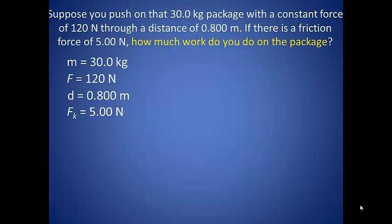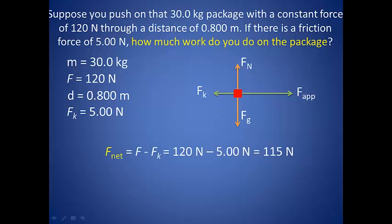Now suppose you push on that 30 kilogram package with a constant force of 120 newtons through a distance of 0.8 meters. If there is a friction force of 5.0 newtons, how much work do you do on the package? Since we are dealing with forces, it can be useful to draw a free body diagram of our package. There is no vertical motion, so our force of gravity is balanced by our normal force. We are pushing the box to the right with an applied force of 120 newtons, while the kinetic friction acts in the opposite direction at a magnitude of 5.0 newtons.